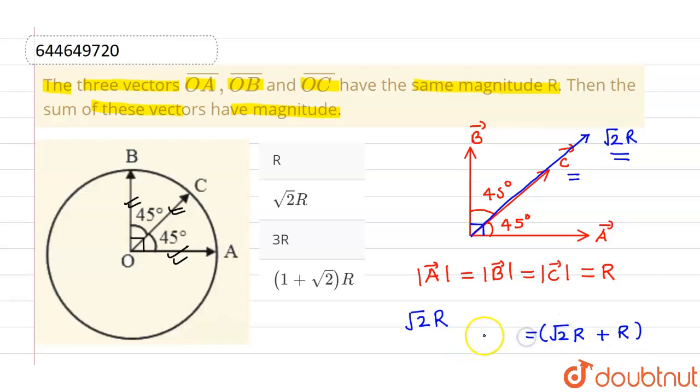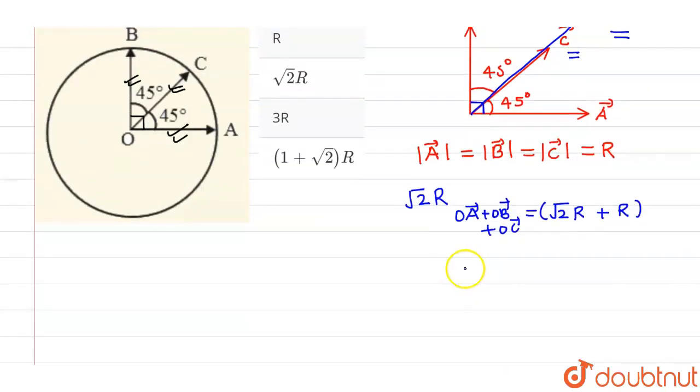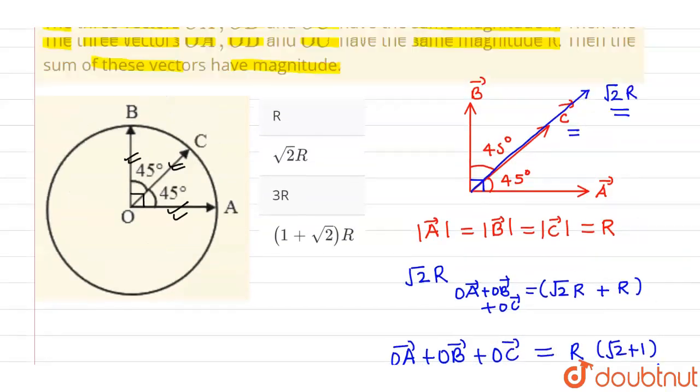So this will be our sum of three vectors: A vector plus B vector plus C vector will be equals to root 2 R plus R. Now further, this can be written as OA vector plus OB vector plus OC vector equals R times root 2 plus 1. So this is our correct answer.